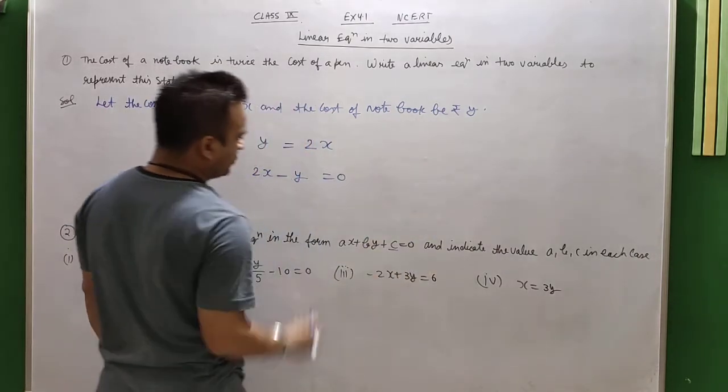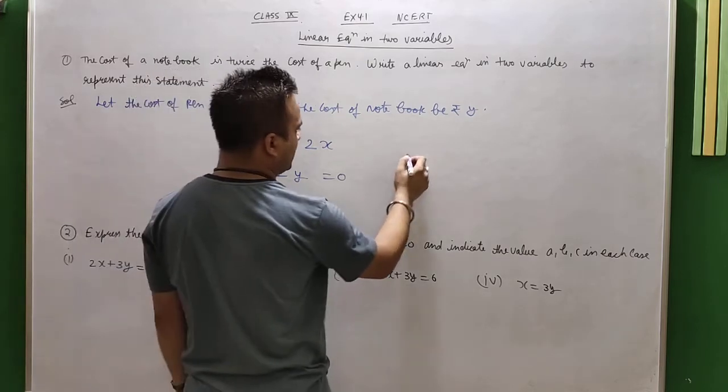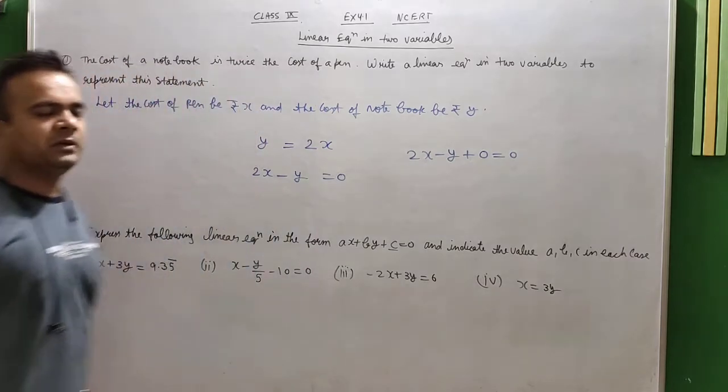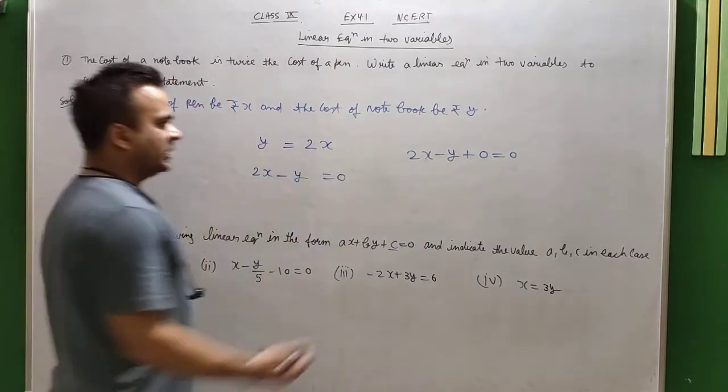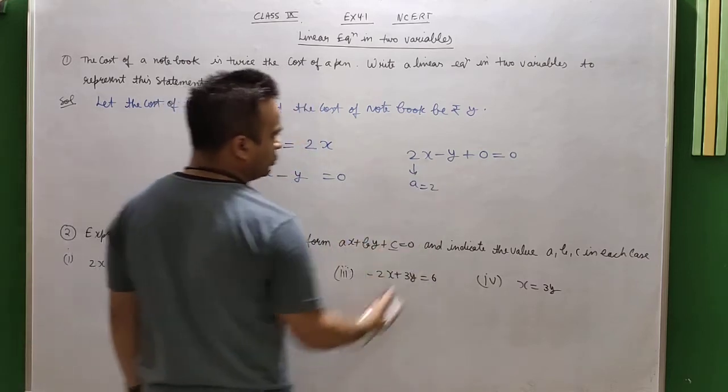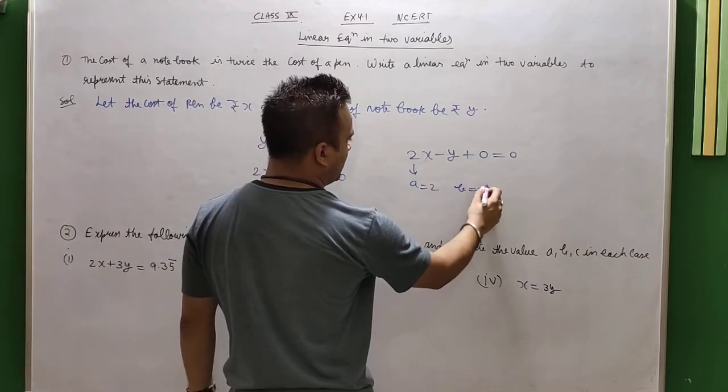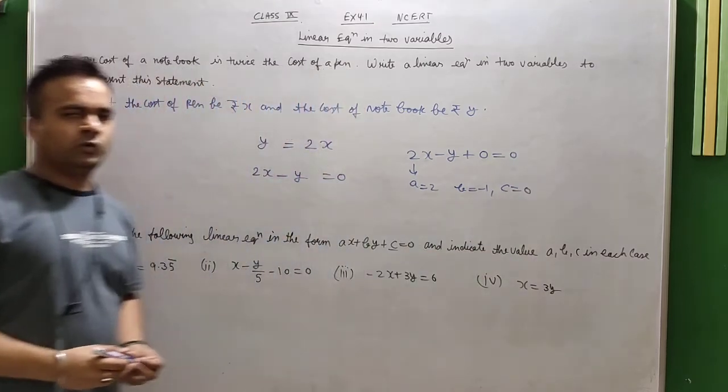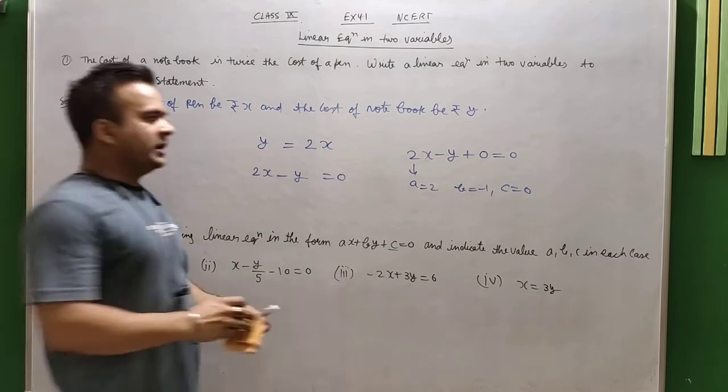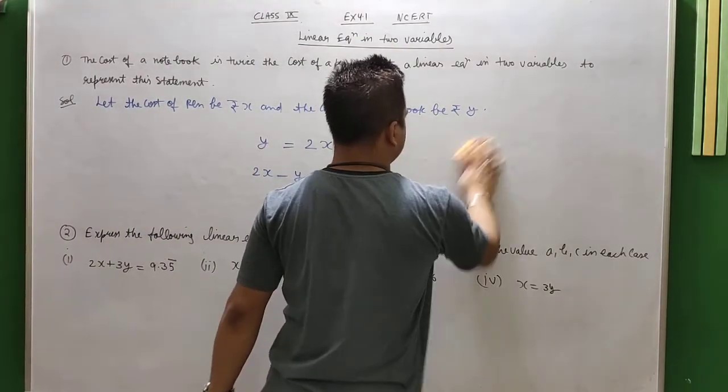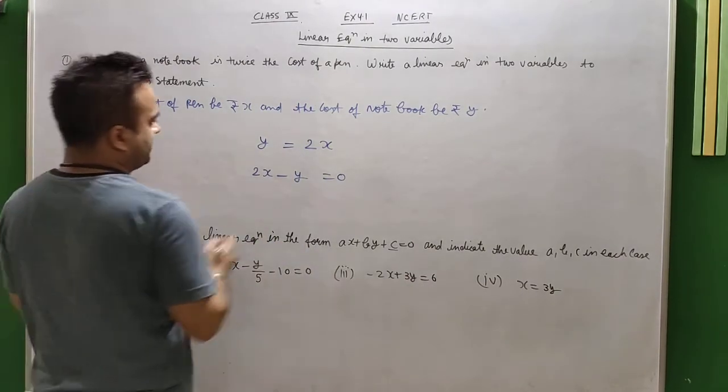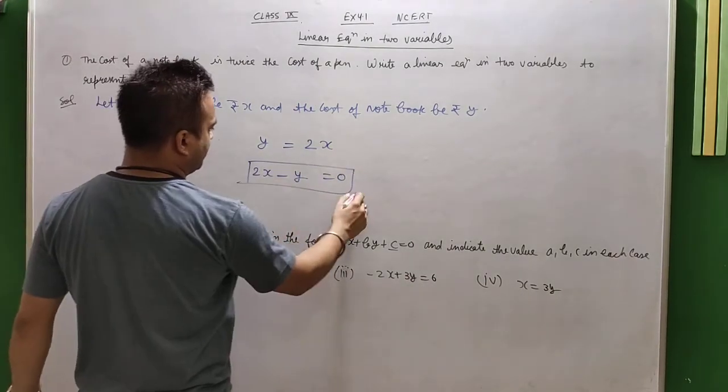To write it in standard form, 2x minus y equals 0. Now you will say, sir, this is not c. So if we write it in the standard form, then c is 0. If we write it like this, it will be 2x plus negative 1y plus 0 equals 0. So this is our answer, students, look at this equation.